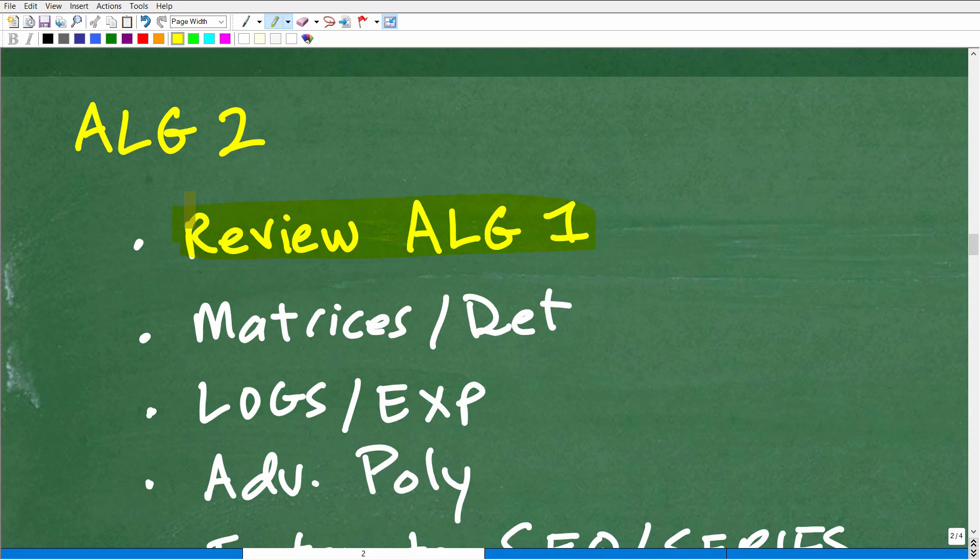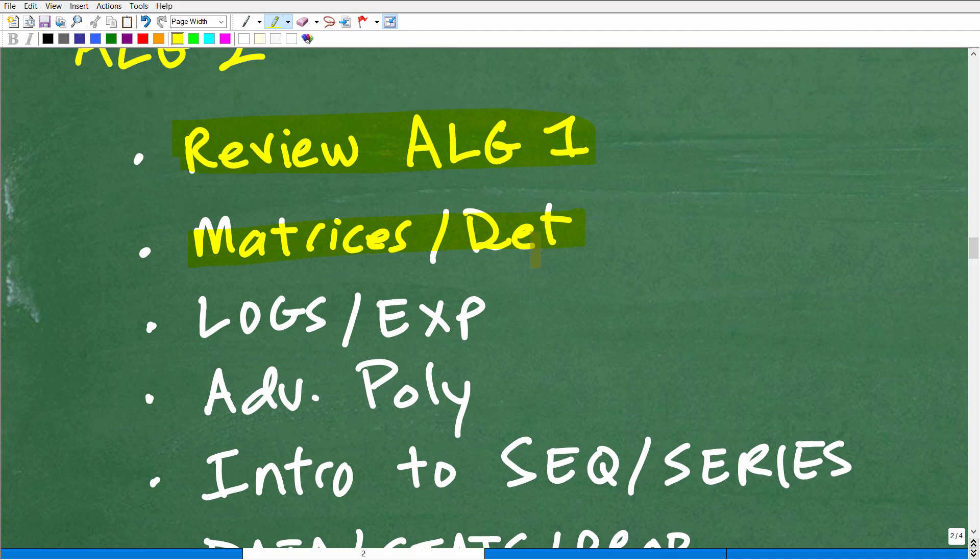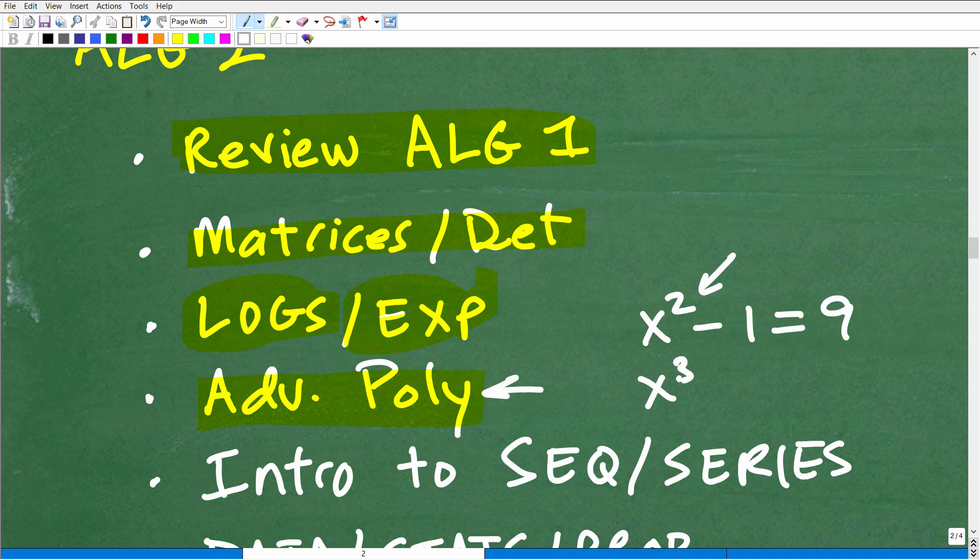So let's take a look at Algebra 2. In Algebra 2, you're pretty much going to be doing a review of Algebra 1. It's everything in Algebra 1, which we saw is a lot, you're going to be doing again. It's just more of the same, if you will. But then you're going to be introduced to new, more advanced Algebra topics, things like matrices, determinants. Again, if you don't know what these things are, you'll certainly learn them. Another big thing that's generally taught in most Algebra 2 courses is logarithms, which are a part of exponential functions. Then you start learning about advanced polynomial theorems, how to solve higher order polynomial equations.